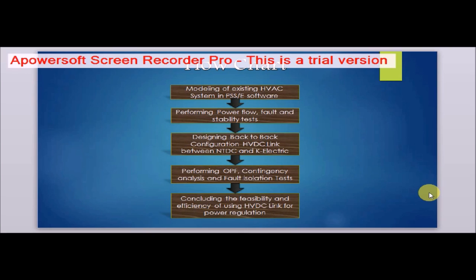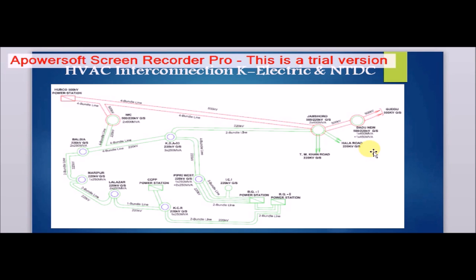First, we will see the flowchart of our project. Initially, we are going to model the existing HVAC system in PSSE software, then perform the power flow, fault, and instability tests. After that, we will design the back-to-back configuration of an HVDC link between the NTDC and K-Electric utilities. Following the incorporation of the HVDC link, we will perform contingency analysis, fault isolation tests, and stability analysis, and then conclude on the feasibility of the HVDC link incorporation.